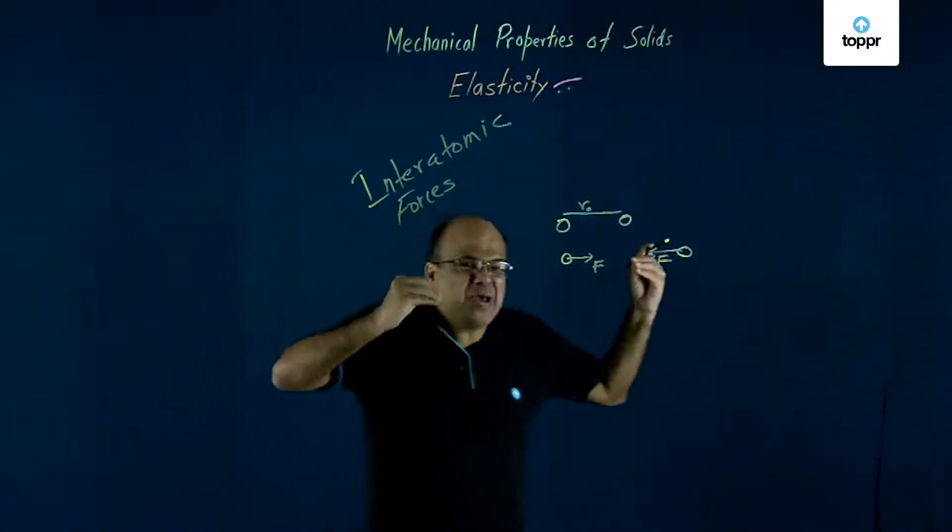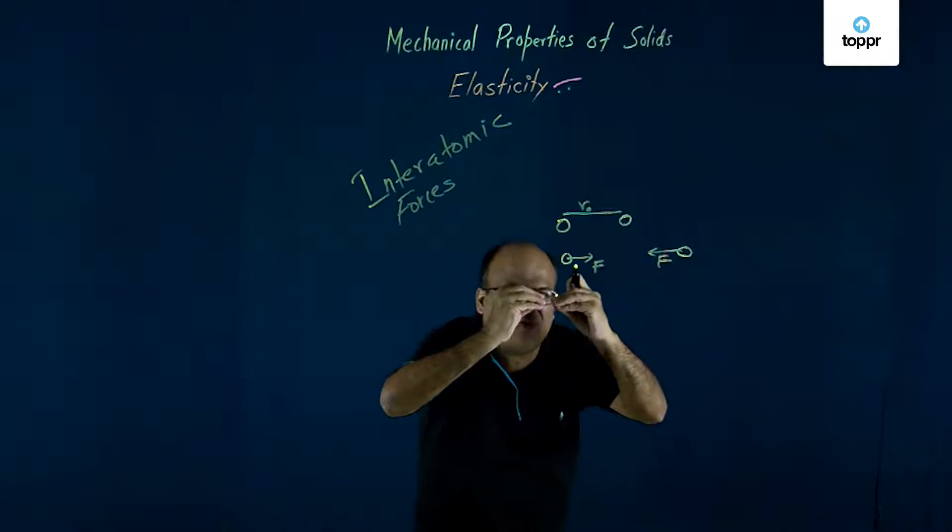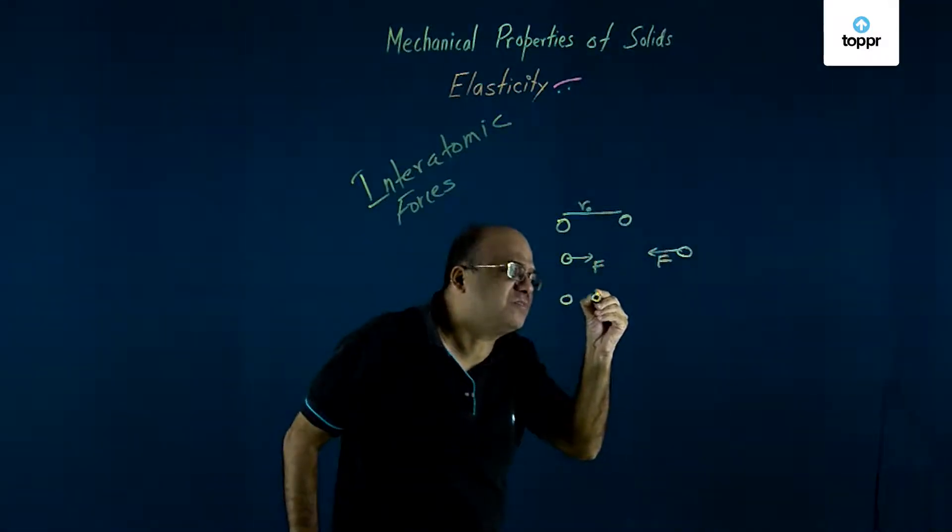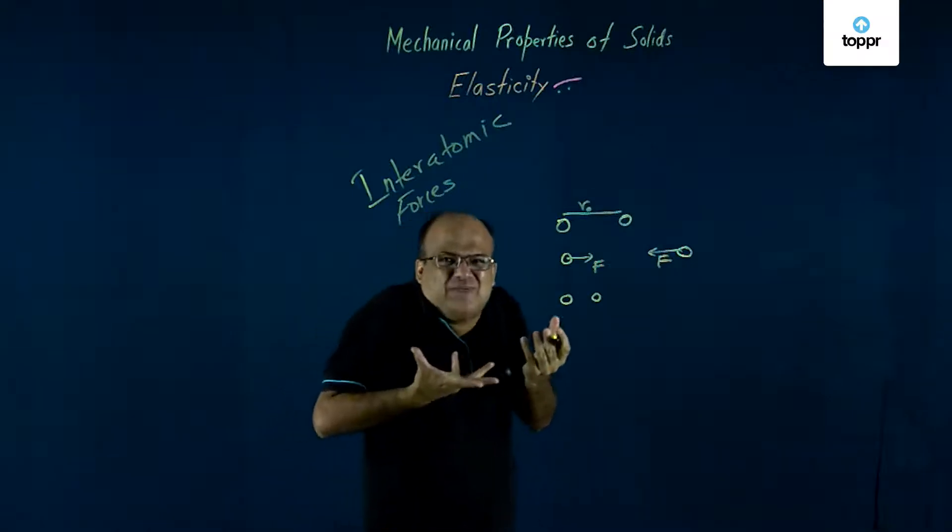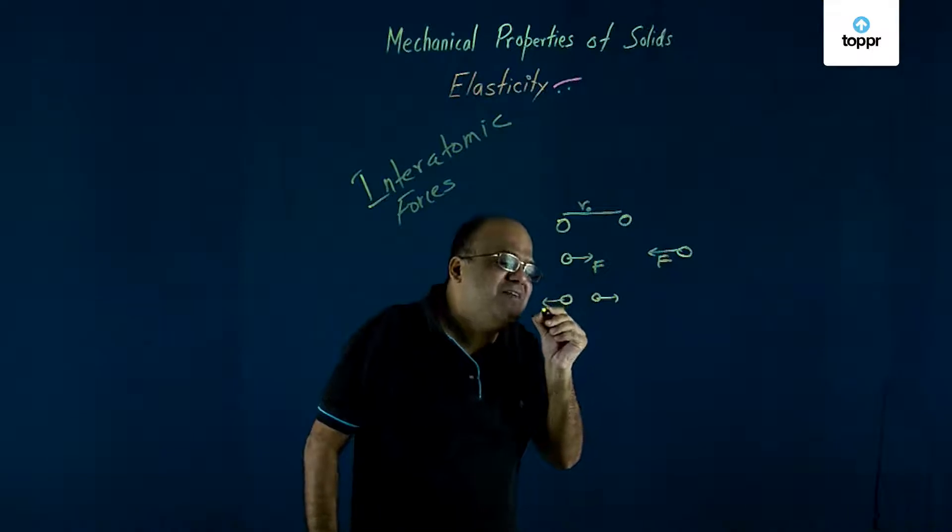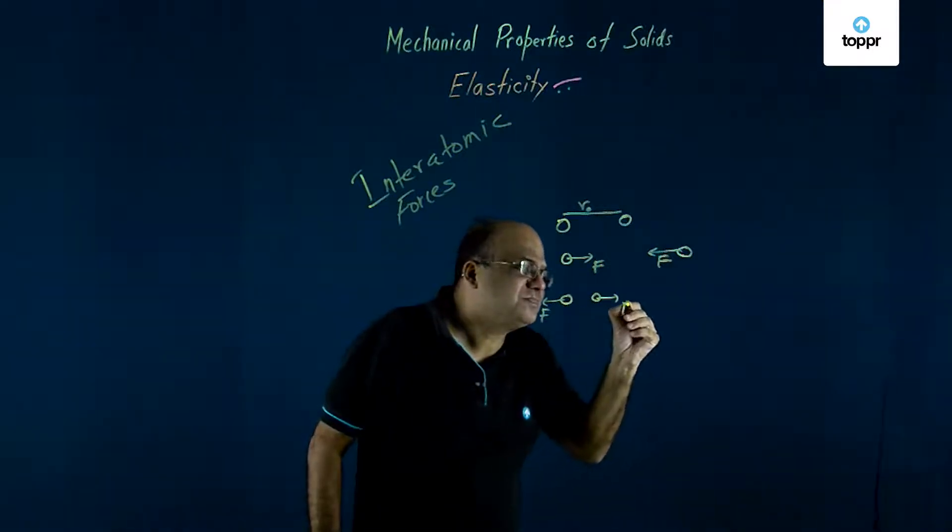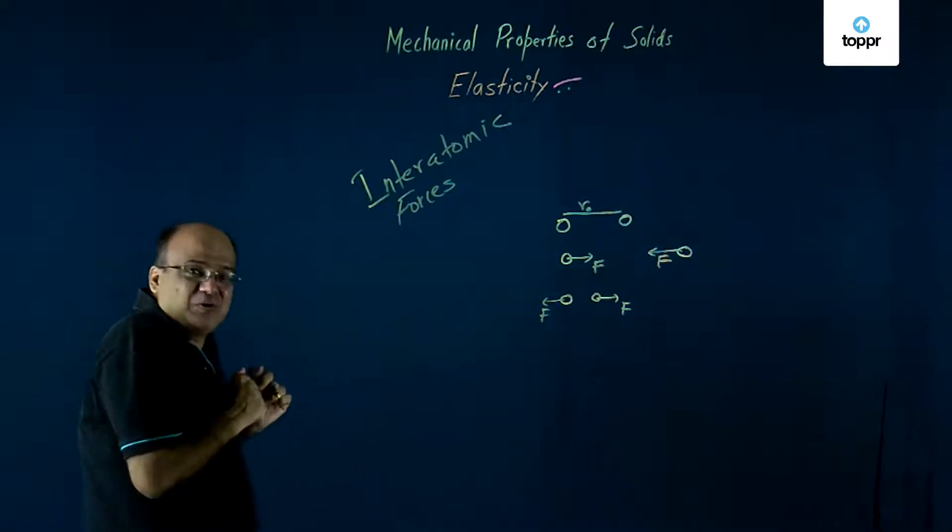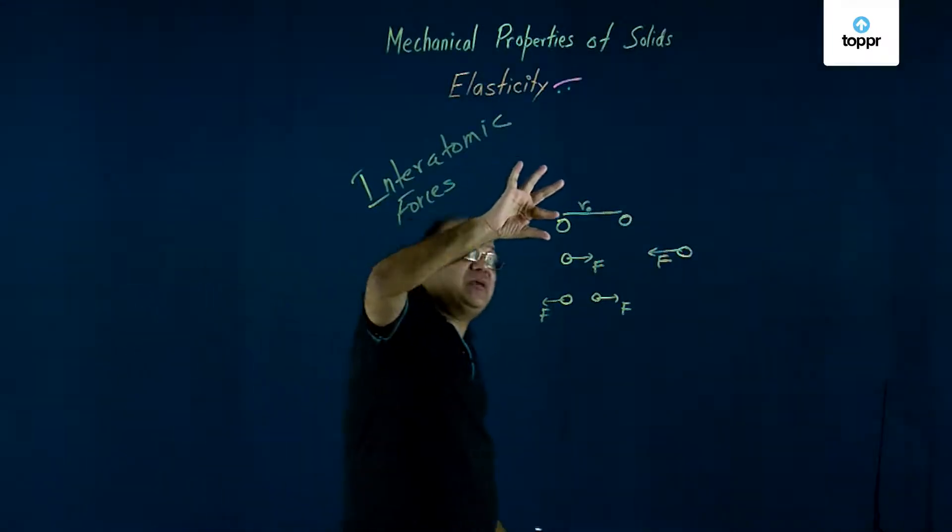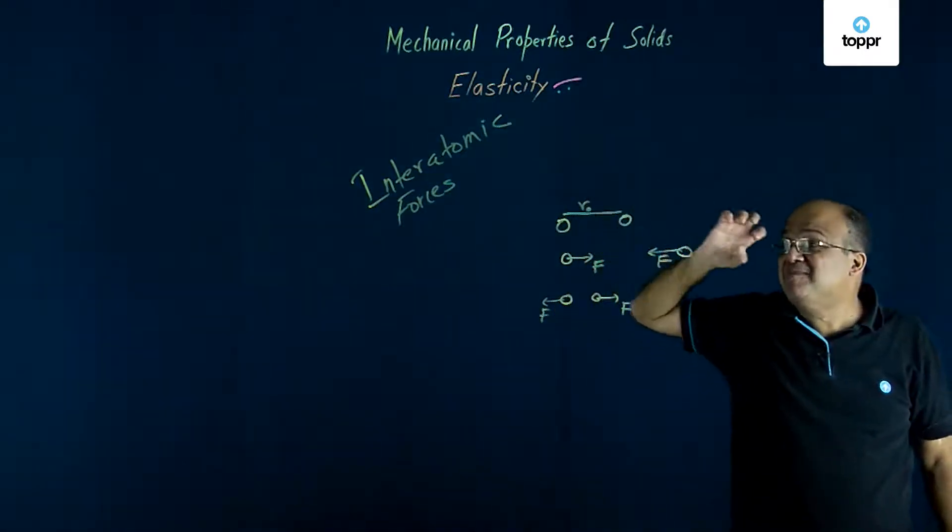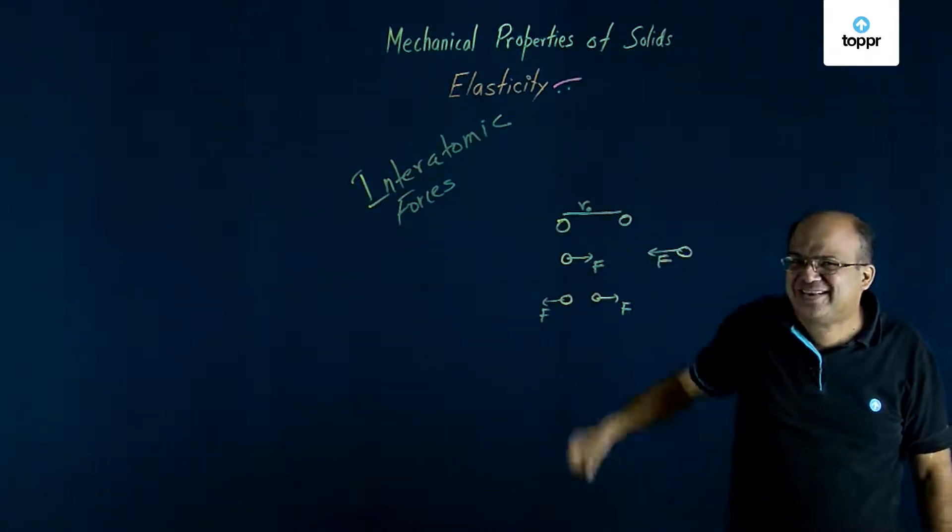When we apply a compressive force the atoms are pulled closer. Atoms also don't like that. So now the interatomic force becomes repulsive and again they want to come to their equilibrium separation or normal separation. Because of this you got elasticity.